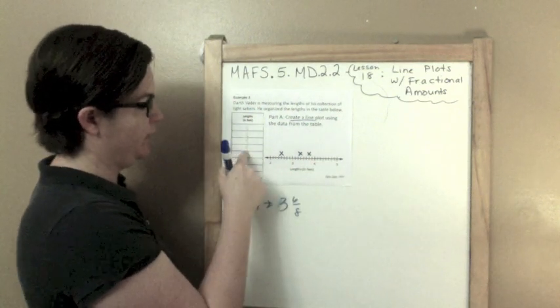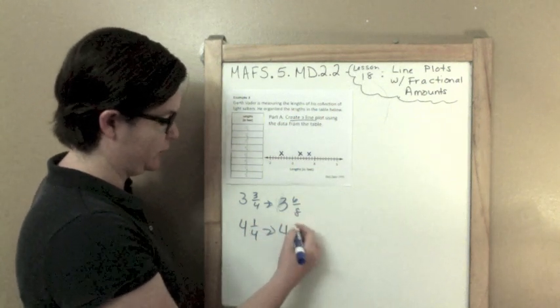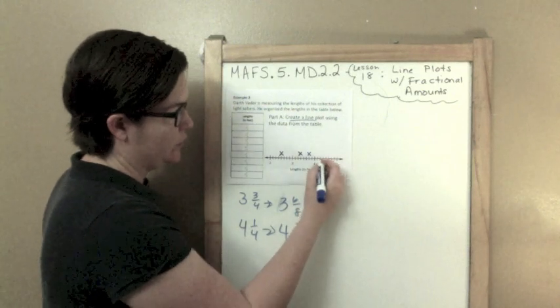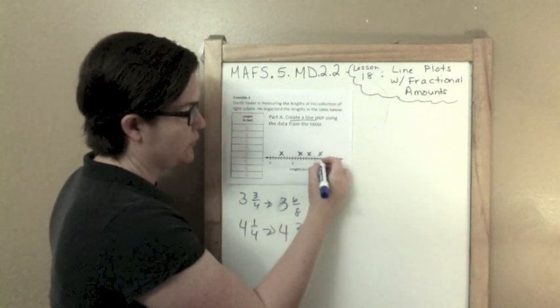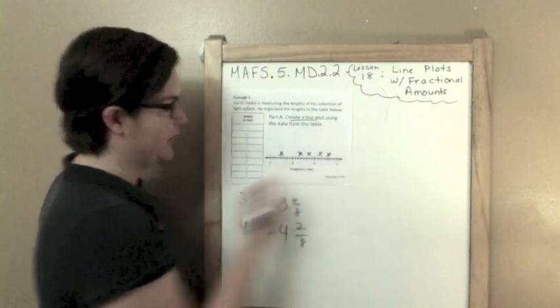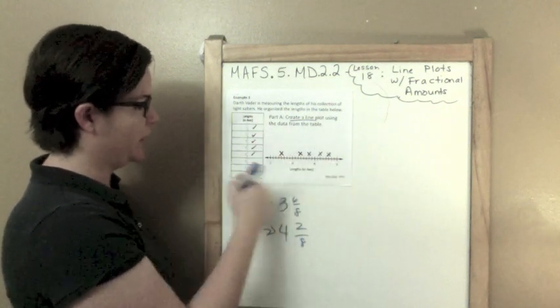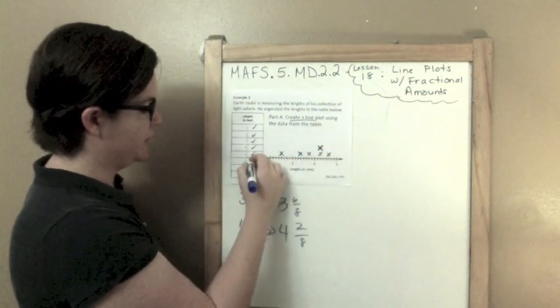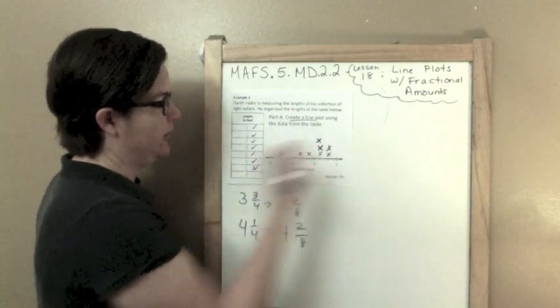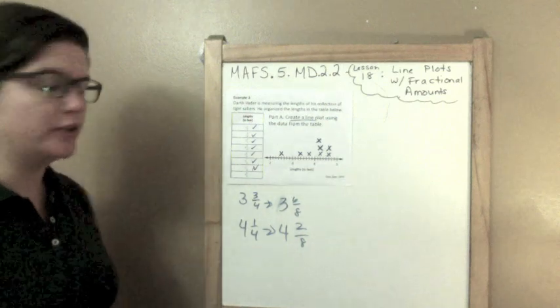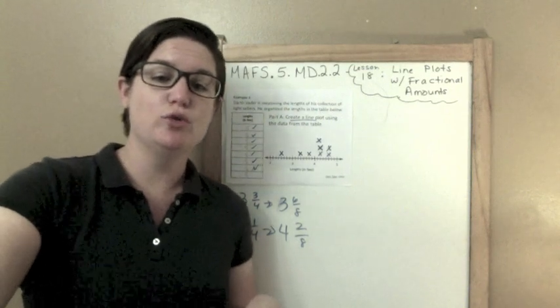3 and 3 fourths would be the same thing as 3 and 6 eighths. So 1, 2, 3, 4, 5, 6, put an X. 4 and 1 fourth would be equivalent to 4 and 2 eighths. 4 and 5 eighths, 1, 2, 3, 4, 5. So I've done 1, 2, 3, 4, 5. I need to be marking these as I go. 4 and 1 fourth, that was right here, so it just goes on top. Another 4 and 1 fourth, and 4 and 5 eighths. So that is what your line plot should look like.